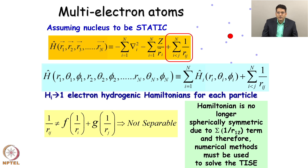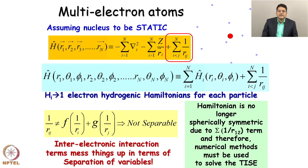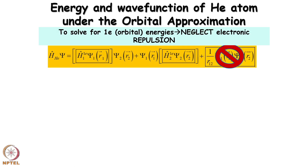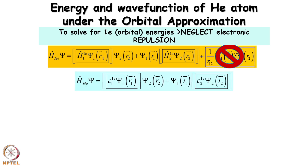If the R_ij term were not there I could solve analytically like the hydrogen atom. But because of this term I cannot solve it analytically — I need numerical methods. The inter-electron repulsion term is what brings complications to every quantum mechanical problem for atoms and molecules. So if I cannot solve it, what should I do? The easiest approach is to neglect the 1/R12 term, and that is what leads to the orbital approximation.